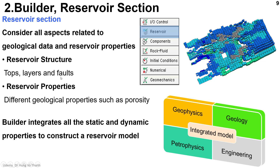For example, the faults and layers of folds inside the reservoir will be kept and represented in CMG. Regarding reservoir properties such as porosity and permeability, don't worry — CMG will keep and represent them directly in the CMG software. You don't need to convert or transfer data before importing to CMG software. That is one of the advantages of CMG software.